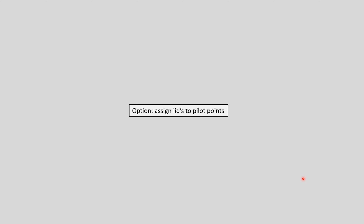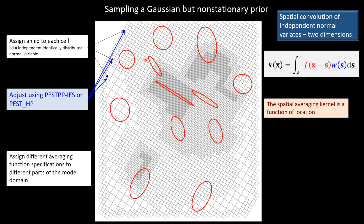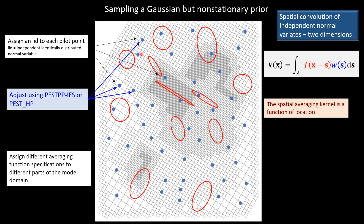There are other options as well. The same process, based on the same concepts, can be implemented if the IIDs are actually assigned to pilot points rather than individual cells. This makes random field generation and manipulation a little bit quicker, without compromising the non-stationary statistics — and everything's a little bit easier and quicker to adjust when IIDs are assigned to pilot points.